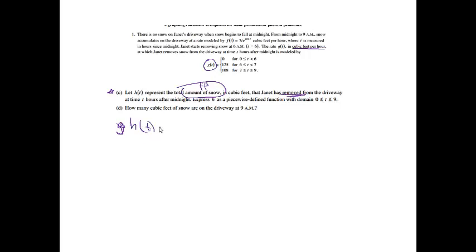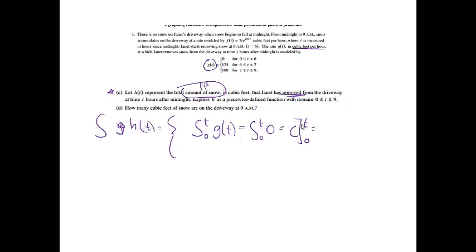For the first piece, between 0 and 6, I take the integral from 0 to t of g(t), which equals 0 for this interval. The integral of 0 is just a constant, and evaluating at t and 0 gives zero minus zero. So H(t) equals 0 for 0 less than or equal to t less than 6.